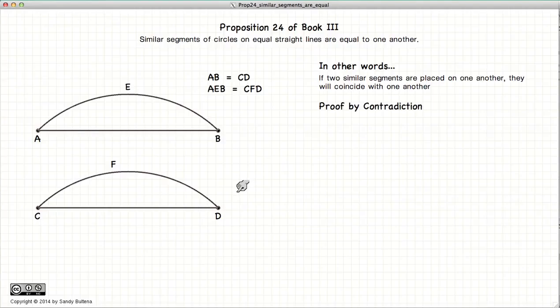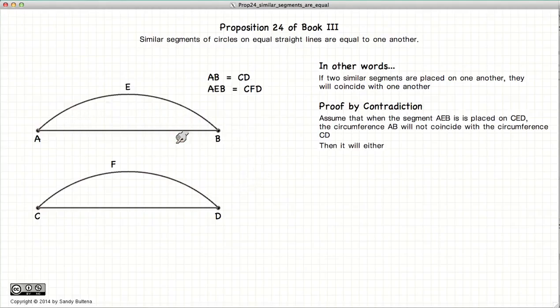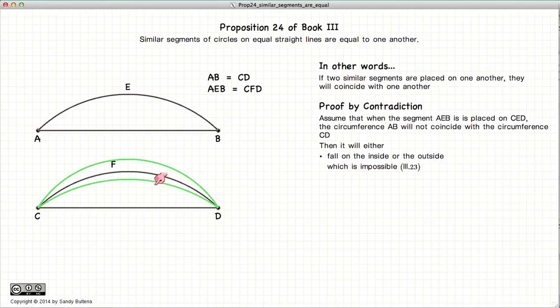So we are going to prove this by contradiction. Let's assume that we have taken AEB and we have laid it over top of this circular segment CFD. Then either it will lie below or above. And if it lies below or above, according to Proposition 23 of Book 3, we cannot have two similar segments of circles that are not equal. So this simply cannot be according to Proposition 23 of Book 3.